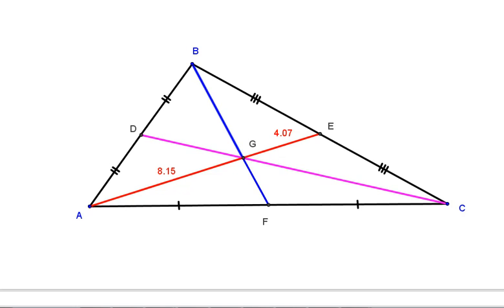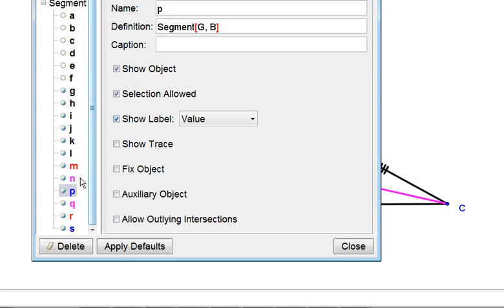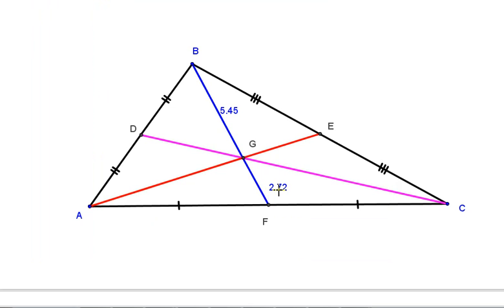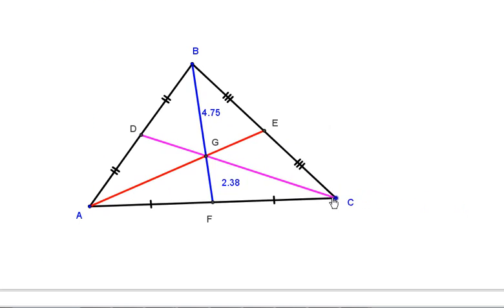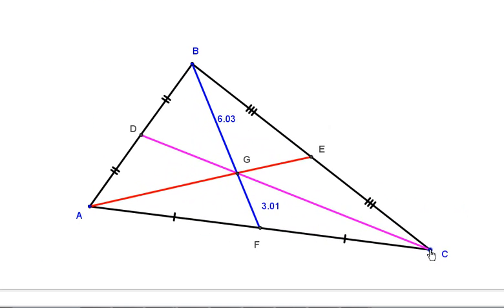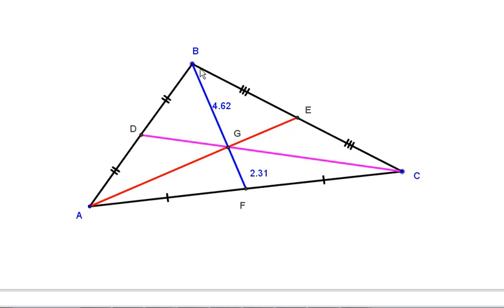Well, let's look at another median. Let's look at the blue one. Okay, we see that the blue is also in this 2 to 1 ratio. That the length from the vertex B to the centroid is double the length from the centroid to the side.